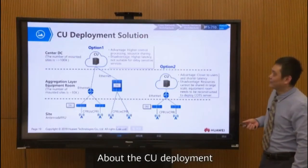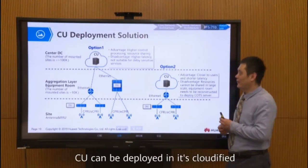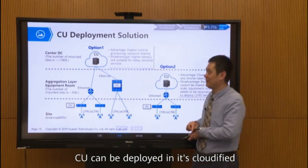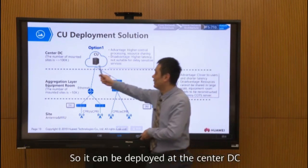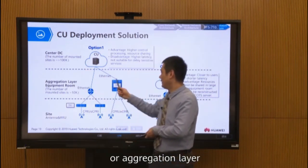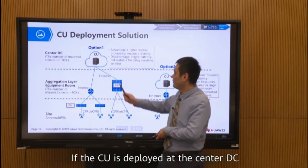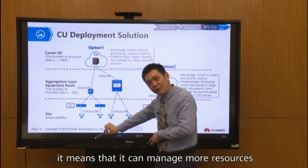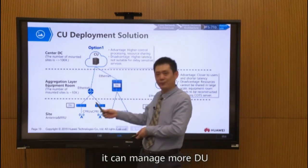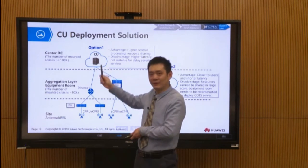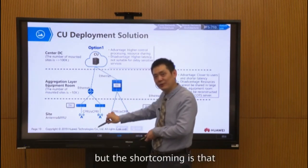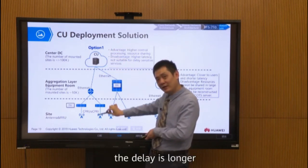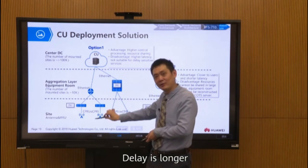Regarding CU deployment, the CU is cloudified and can be deployed at the center DC or at the aggregation layer. If the CU is deployed at the center DC, it can manage more resources and more DUs because it is centralized. However, the shortcoming is that the delay is longer because the distance is longer.